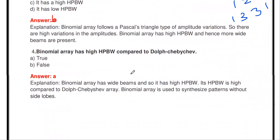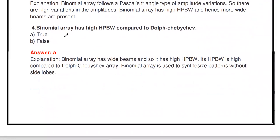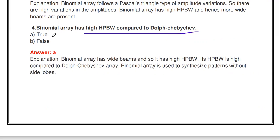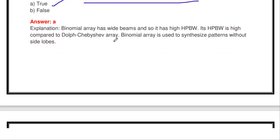The next question: the binomial array has a high half power beam width compared to Dolph-Chebyshev — true or false? It is true. The binomial array has a wide beam, so the half power beam width is also high.